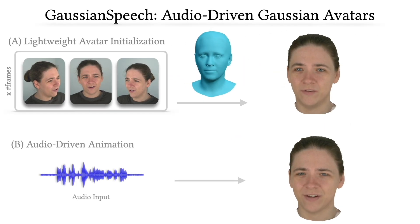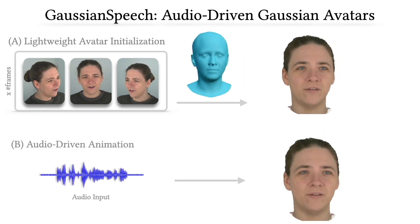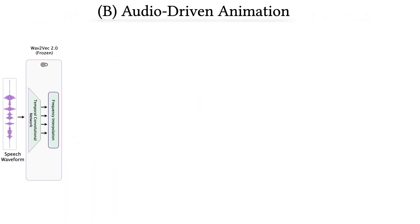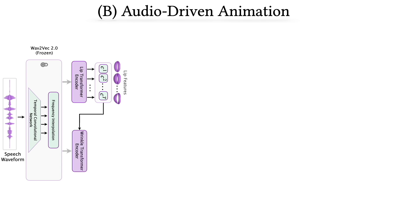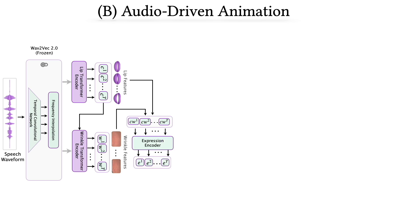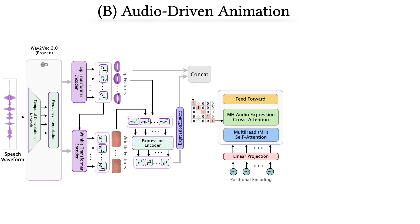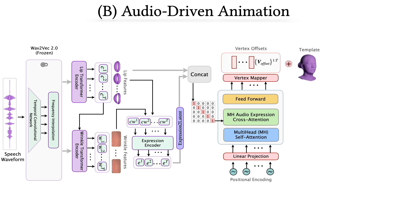We then perform audio-driven animation of our initialized avatar. Given a speech audio signal, we use a pre-trained wave2vec encoder to predict lip and wrinkle features sequentially. These are then used to predict flame expression parameters via an expression encoder. Finally, the expression and lip features are concatenated and input to our transformer decoder with cross-attention via an alignment mask, which predicts the mesh facial animation.